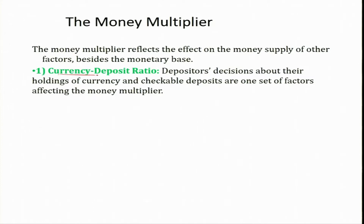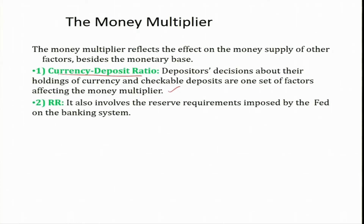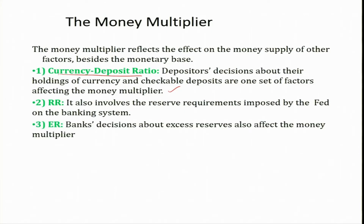The first factor is the currency deposit ratio — the depositors' decisions about their holdings of currency and checkable deposits. The second factor is the required reserve ratio, which involves reserve requirements imposed by the Fed on the banking system — whether it is 10%, increased to 15%, or reduced to 5%. That also affects the money multiplier. The third factor is excess reserves — the banks' decisions about excess reserves also affect the money multiplier.